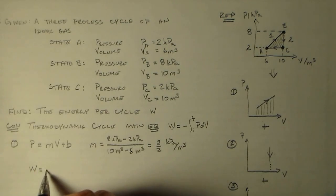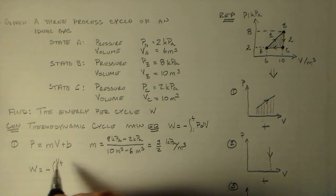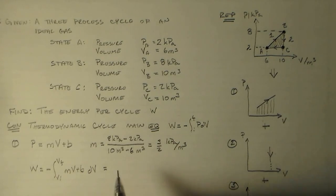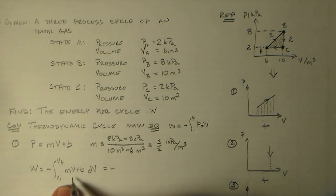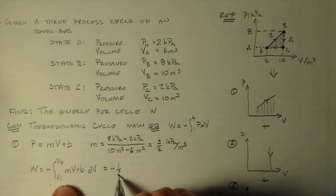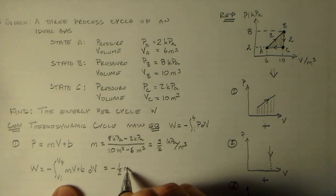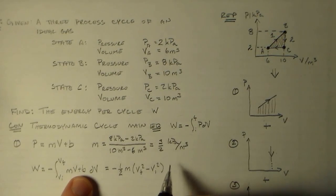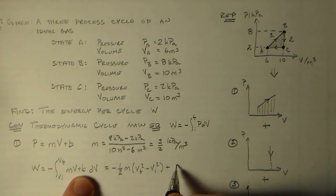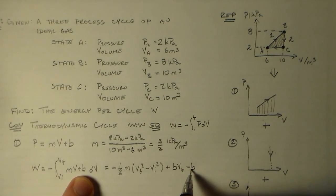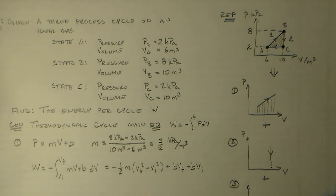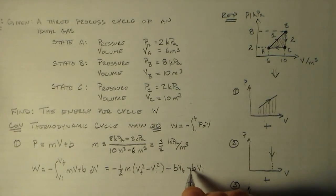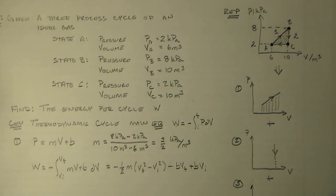So for our work, we have the integral from VI to VF of MV plus B, DV. This is not one of the world's most difficult integrals. So we have one half M VF squared minus VI squared, plus BVF minus BVI. Actually these are minuses. Because this guy distributes.